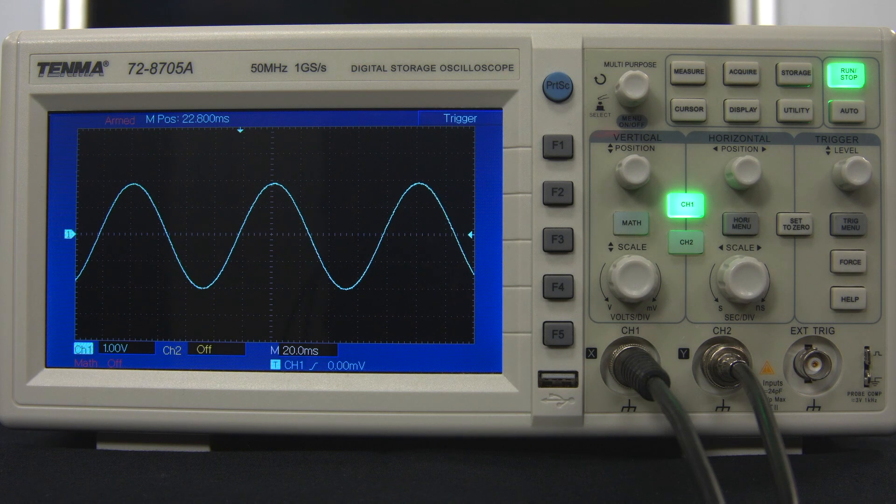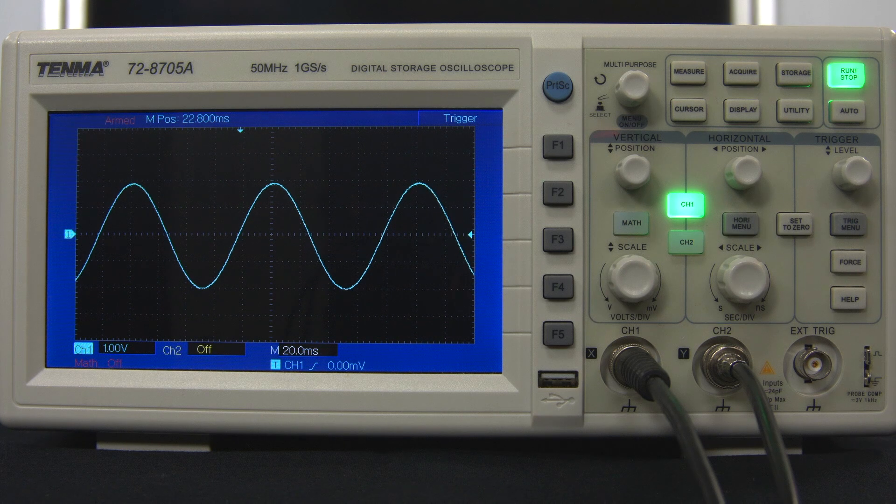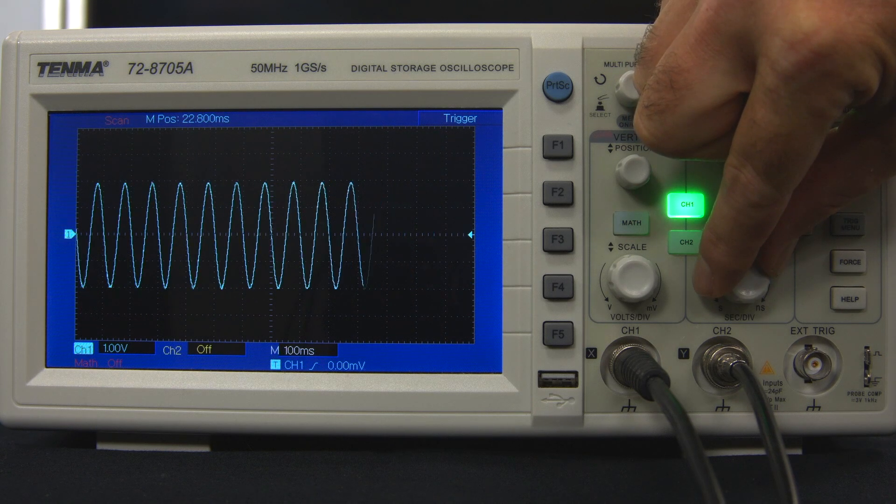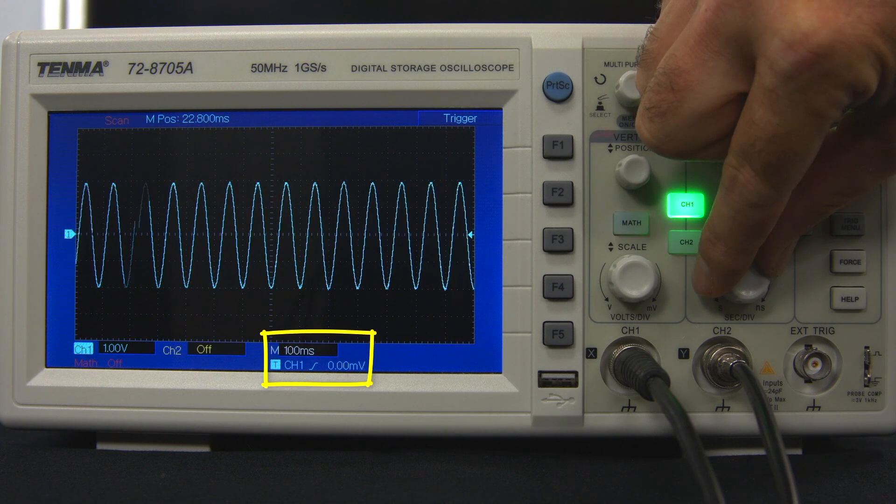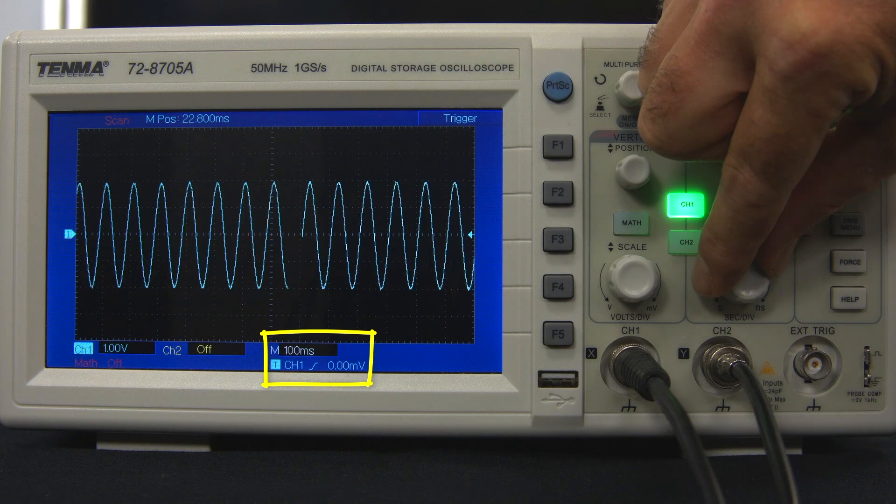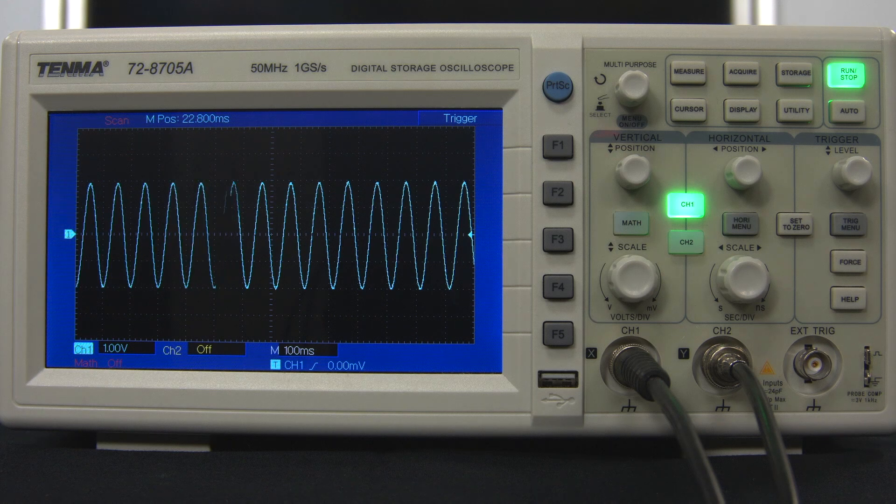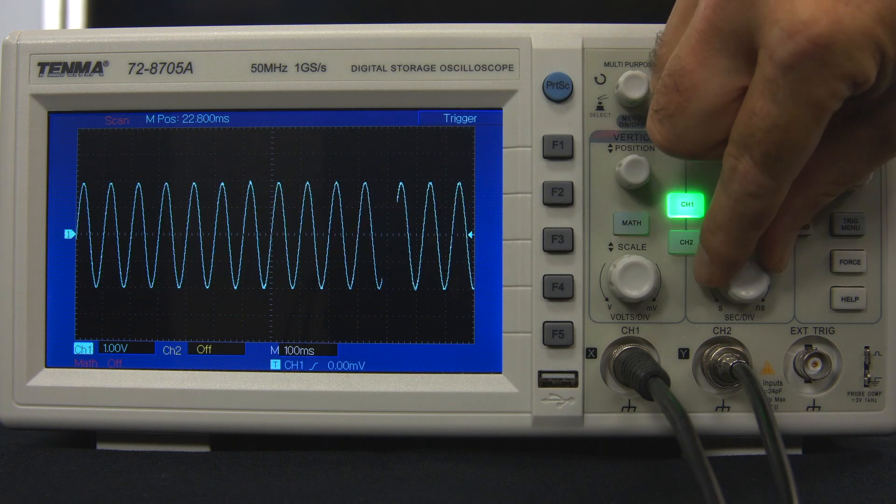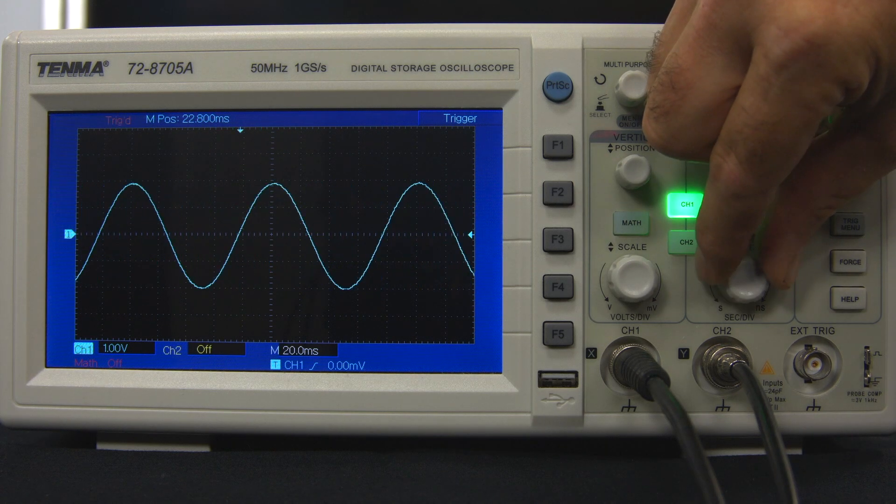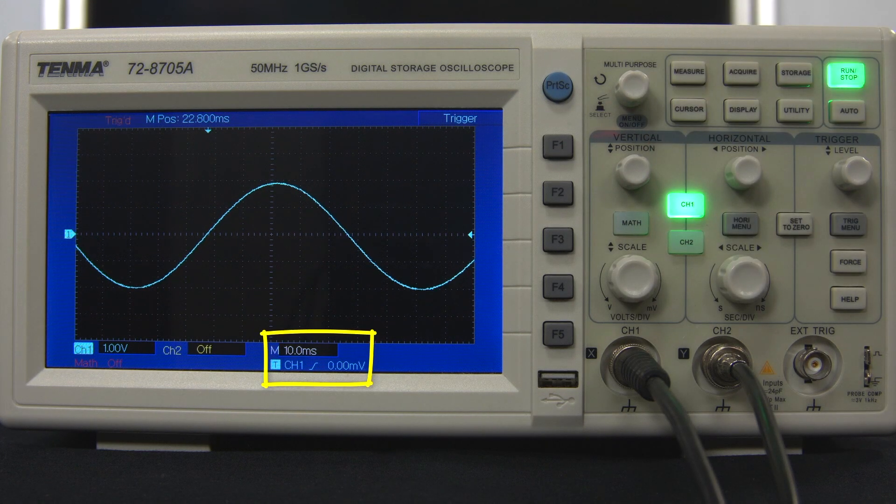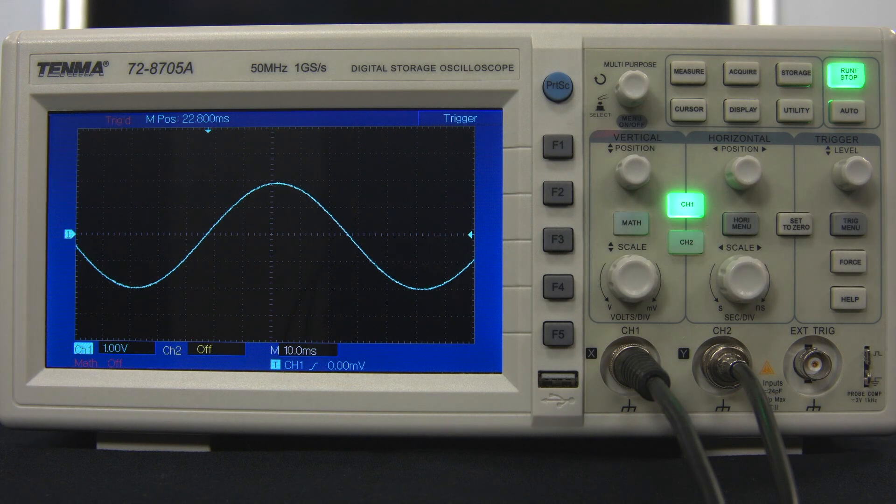Similar to the vertical section, there is also a scale control for the horizontal axis. This is called the time base. The time per division can be increased, fitting more oscillations onto the screen. Here, with 100 milliseconds per division, there is only one division between the peaks. Decreasing the time per division acts to zoom in horizontally. With a time base of 10 milliseconds per division, there are 10 horizontal divisions between peaks for this 10 hertz signal.